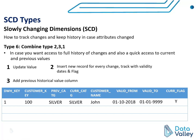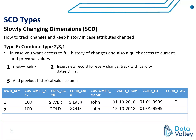Now if we receive new data from the source system for the same customer, we will insert a new record — this is Type 2. We insert a new record with the new category, with valid from set to the date when we received the new data. Let's say this data became available in the source system starting from 15th of October 2018. Valid to will be open for now, and current flag equals Y.